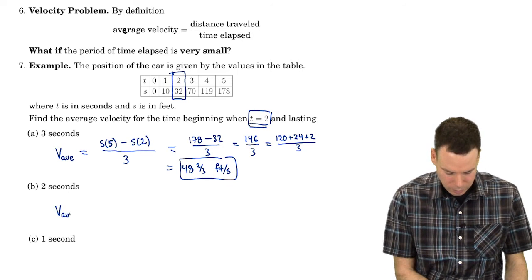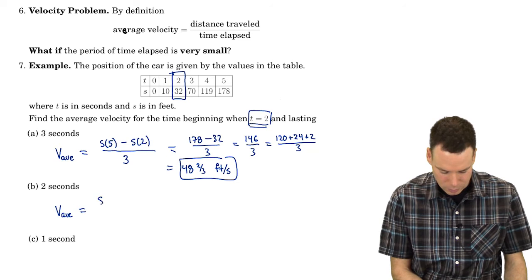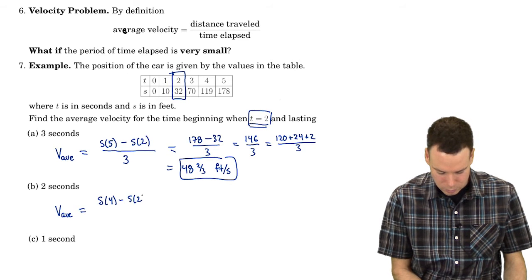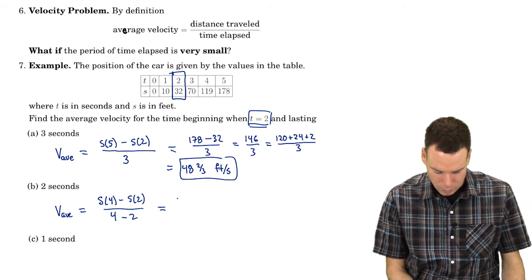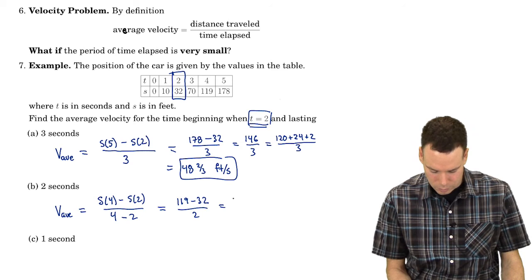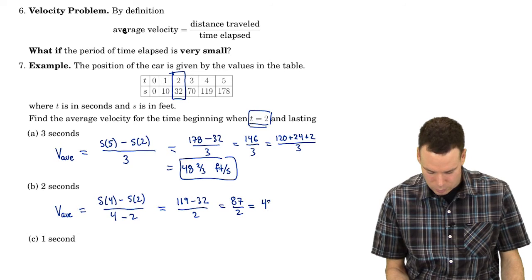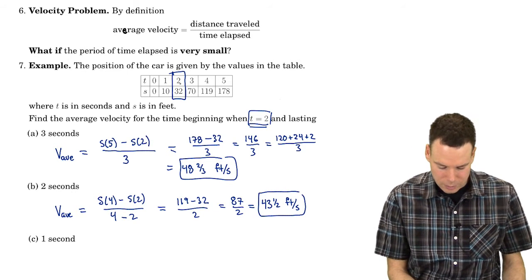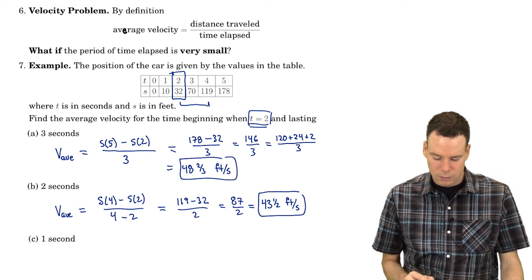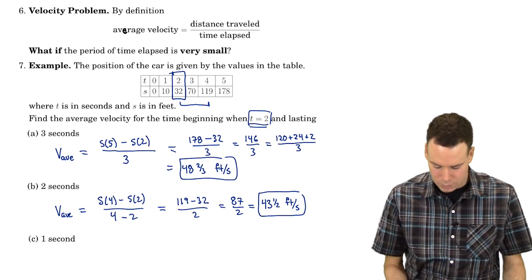What about starting at time 2 and considering just a 2-second interval? That's s(4) minus s(2), all over 4 minus 2 — change in distance over change in time. That is 119 minus 32 all over 2, or 87 over 2, which is 43 and a half feet per second. So over the 2-second interval the average velocity was 43 and a half feet per second.